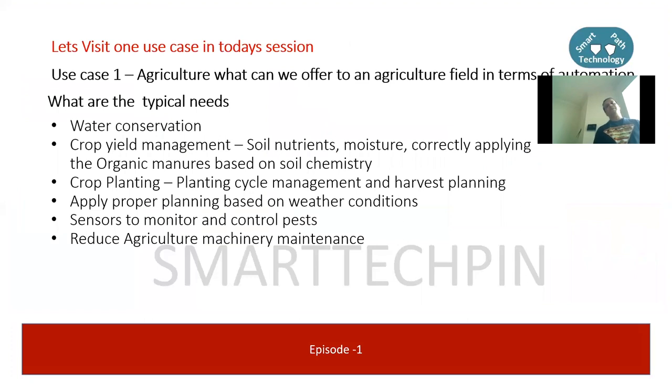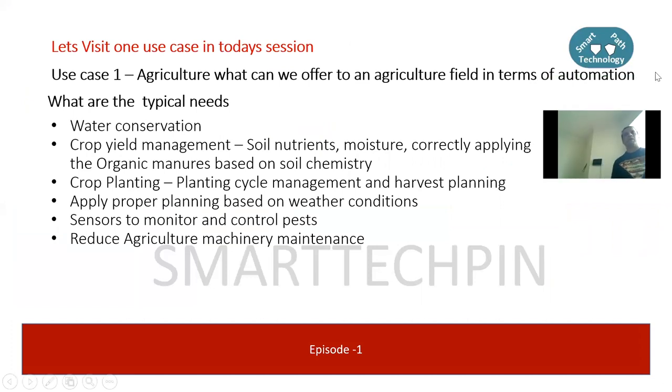Let's visit a use case for agriculture - how IoT can be implemented in your agricultural environment. Typical needs are water conservation, where water is precious and must be used efficiently. Crop yield management - maximizing yield from agricultural fields. Crop planting lifecycle management and proper planning based on weather conditions.